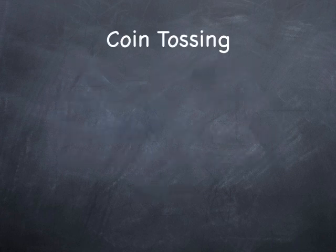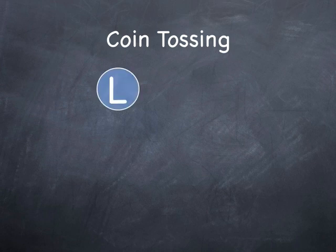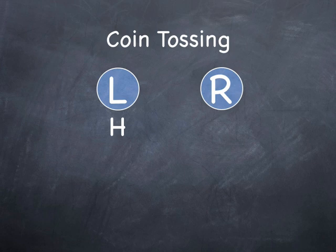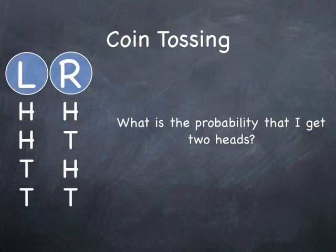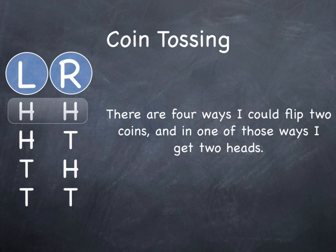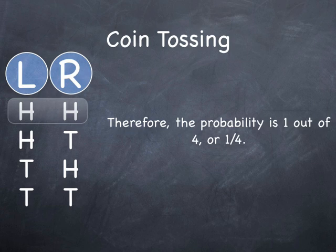In my next example, I'm going to focus on coin tossing. Here's the coin I toss with my left hand. Here's the coin I toss with my right hand. So I'm tossing two coins, and here are the possible outcomes: both heads, left heads and right tails, tails and heads, or two tails — four possible outcomes. What is the probability that I get two heads? There are four ways I could flip two coins, and in one of those ways I get two heads. Therefore, the probability is 1 out of 4, or one fourth.